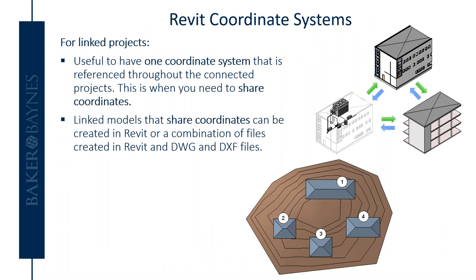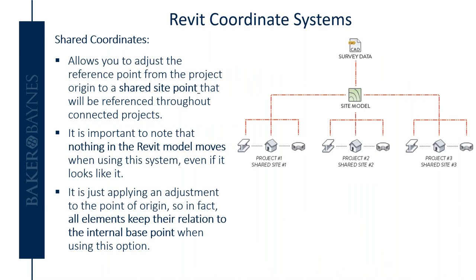Looking at the coordinate system when we work with linked projects: if you are linking projects together, you may need one coordinate system referenced throughout the connected projects, and this is when you need shared coordinates. Projects that have a BIM execution plan in place will specify these shared coordinates within that plan. Link models that share coordinates can be created in Revit, or you can use a combination of Revit and CAD files - DWGs, DXFs, etc. Shared coordinates allow you to adjust your reference point from the project origin to a shared site point referenced throughout connected projects. Importantly, nothing in the Revit model actually moves when using this system - it is just applying an adjustment to the point of origin, so all elements keep their relation to the internal base point.